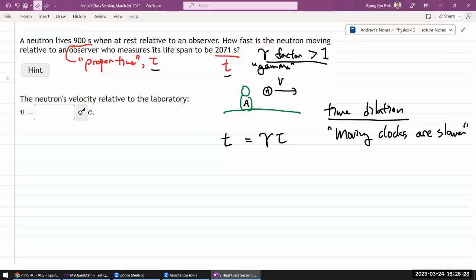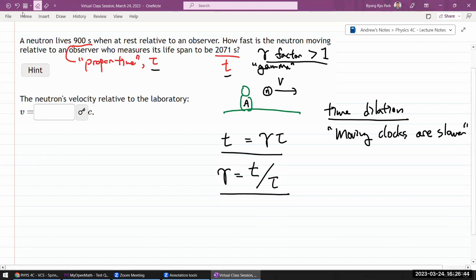From the information given in the question, you can see that my gamma factor must be the time that the stationary observer measures divided by the proper time. So that gives me the gamma factor and that's not the question that they're asking. The question that they're asking is for the velocity. So we have a little bit of additional work to do.